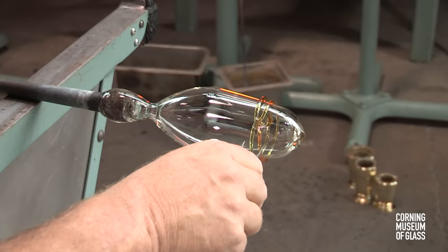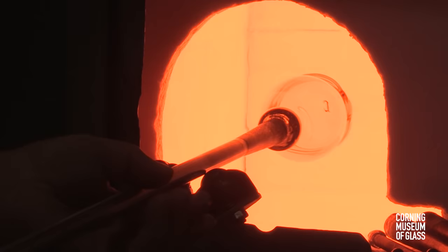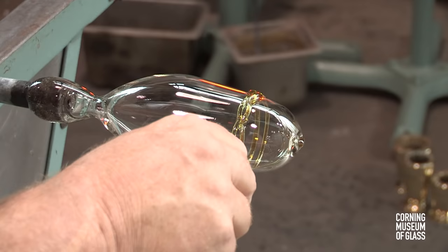The pincers are used to squeeze the two rings together at intervals. The glass is thin and cools quickly, so it's necessary to reheat frequently. This is how the chain is formed.